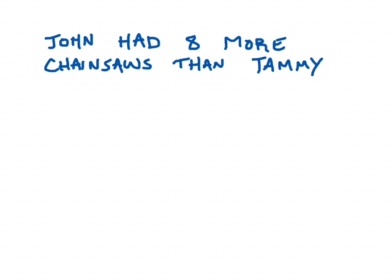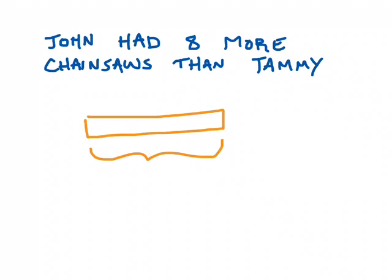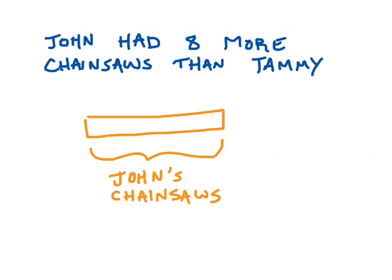Here's how that works. If I say John had eight more chainsaws than Tammy, the first thing I'm going to do is make a box that represents the numerical information. It sounds like John has some chainsaws, so I'm going to make a bar that represents the number of chainsaws John has, and I'm going to label that bar 'John's chainsaws.' When I make a bar diagram, it's really important to label everything. I've chosen to make my bar nice and big, but it's possible to make much smaller bars — it's really up to you.